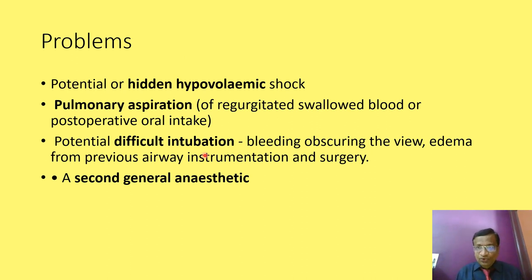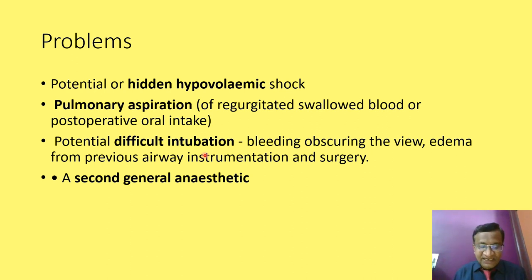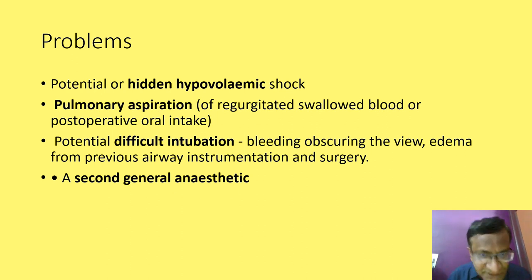When bleeding occurs, we often don't know the true extent of blood loss because the patient has swallowed the blood — this is hidden hypovolemia. A seven-year-old child may have swallowed 200–300 mL of blood. There is also the risk of pulmonary aspiration. The re-intubation for post-tonsillectomy bleeding is notoriously difficult — you may see only blood, and the previously easy intubation becomes terrifying.